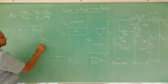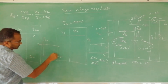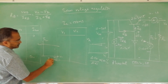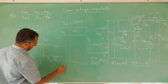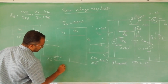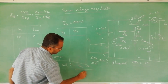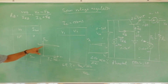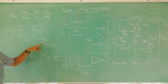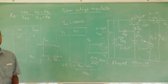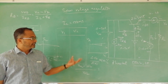From the load regulation graph, V_no_load corresponds to the open-circuit condition and V_full_load corresponds to 500 milliamperes. Load regulation in percentage equals (V_no_load minus V_full_load) divided by V_no_load, multiplied by 100. This way you can set up the circuit, experiment on it, and obtain both line and load regulation.